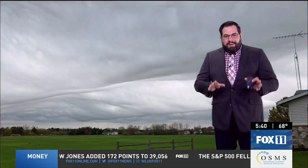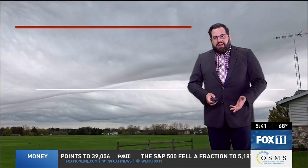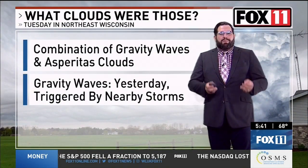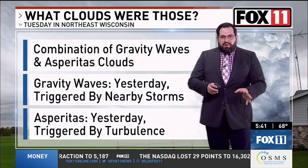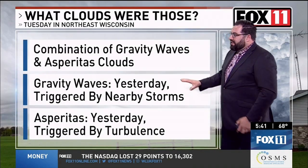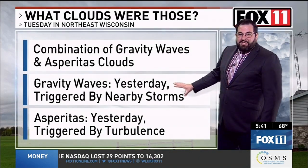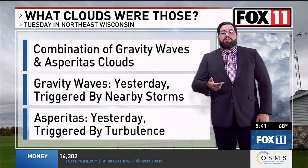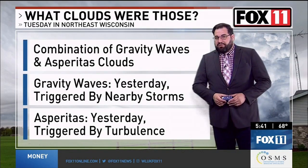I think there were a couple of things going on on Tuesday. Some people saw what are called gravity waves and other people saw what are called asperitis clouds. Gravity waves are basically ripples in the atmosphere. In this case, I think the ripples and waves in the clouds were caused by approaching thunderstorms.